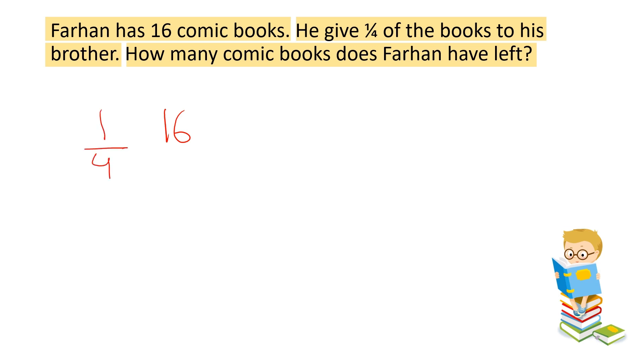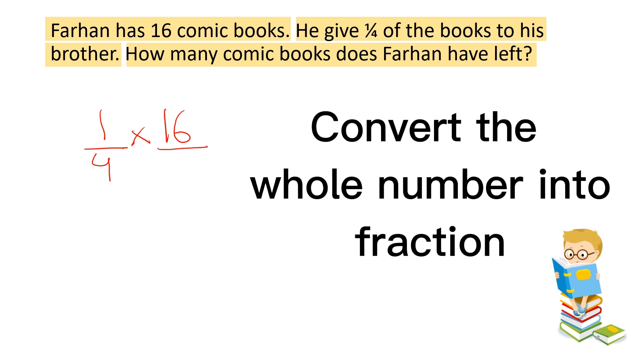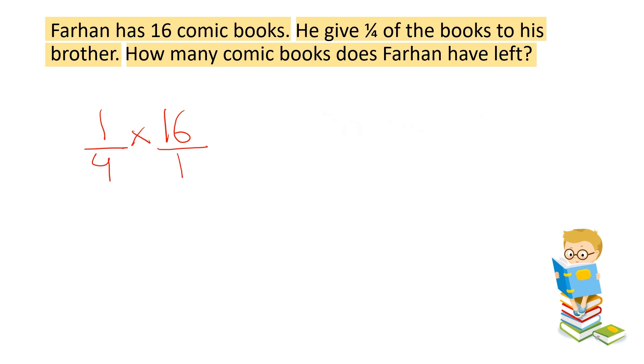For that we need to multiply these two values. And when we multiply a fraction with a whole number, first we convert the whole number into its fraction form by writing denominator as 1. Secondly, we check if we can simplify this fraction. Yes, we can because 16 is divisible by 4. 4 ones are 4 and 4 fours are 16. So, what is left in the numerator? 1 into 4 and the denominator is 1 times 1.